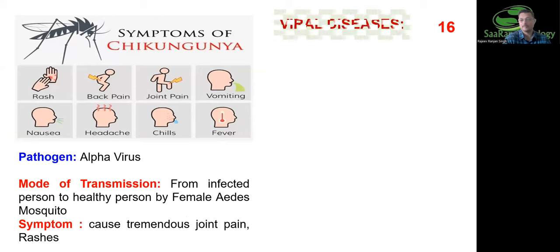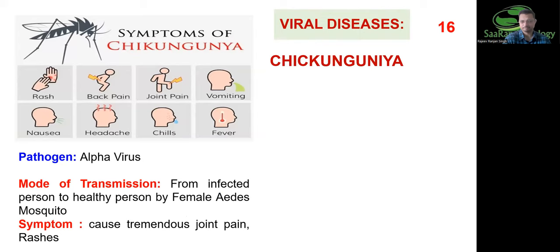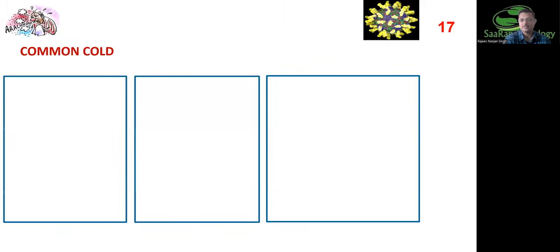Another important disease is chikungunya. The virus is alphavirus, transmitted by the female Aedes mosquito. You can see a lot of rashes and very characteristic joint pain. Headache, chills, fever, and rashes are very common symptoms of chikungunya — joint pain being highly distinctive.